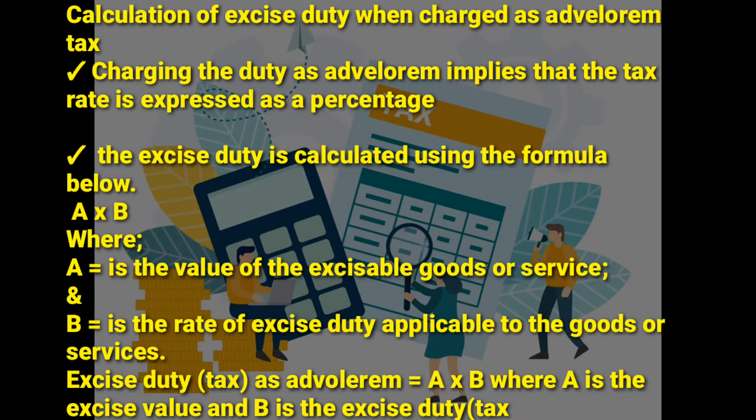Let's look at the calculation of excise duty when charged as ad valorem tax. Charging the duty as ad valorem implies that the tax rate is expressed as a percentage. For ad valorem, the tax rate is expressed as a percentage, but for specific tax, a specific amount is given. The excise duty is calculated using the formula A × B.